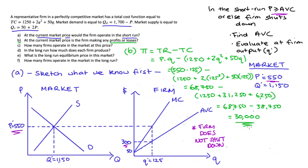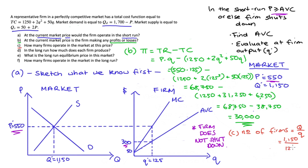In part C we're asked how many firms are in the industry. Each firm makes 125 units and the market produces 1150 units in total. The number of firms equals market output divided by firm output: 1150 divided by 125 equals 9.2 firms. In parts D, E, and F we focus on the long-run equilibrium, so I've cleared the short-run diagrams and most of the working, leaving the marginal cost function.